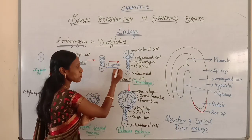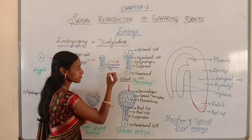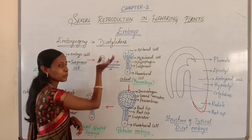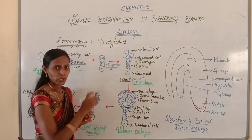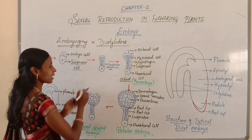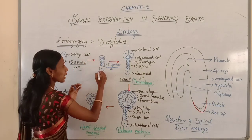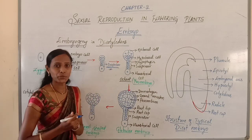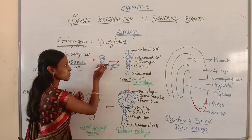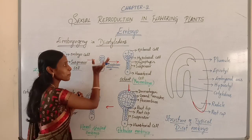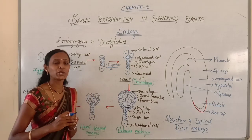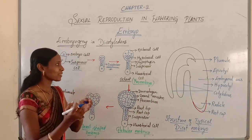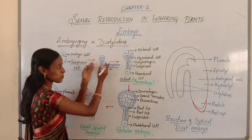What is the importance of this suspensor? The suspensor helps in pushing the embryo into the endosperm. Around the embryo, the endosperm is present as the nutritive tissue. So this suspensor helps in pushing the embryo into the endosperm in order to obtain nourishment.